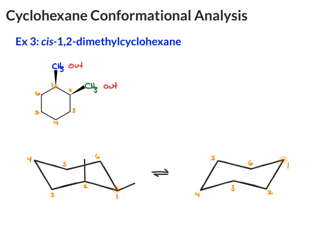So now let's put our methyl on carbon-1, our other methyl on carbon-2. Again, out. They're both up. They started out as cis on the same side and they're both pointed upward, so they're still cis.